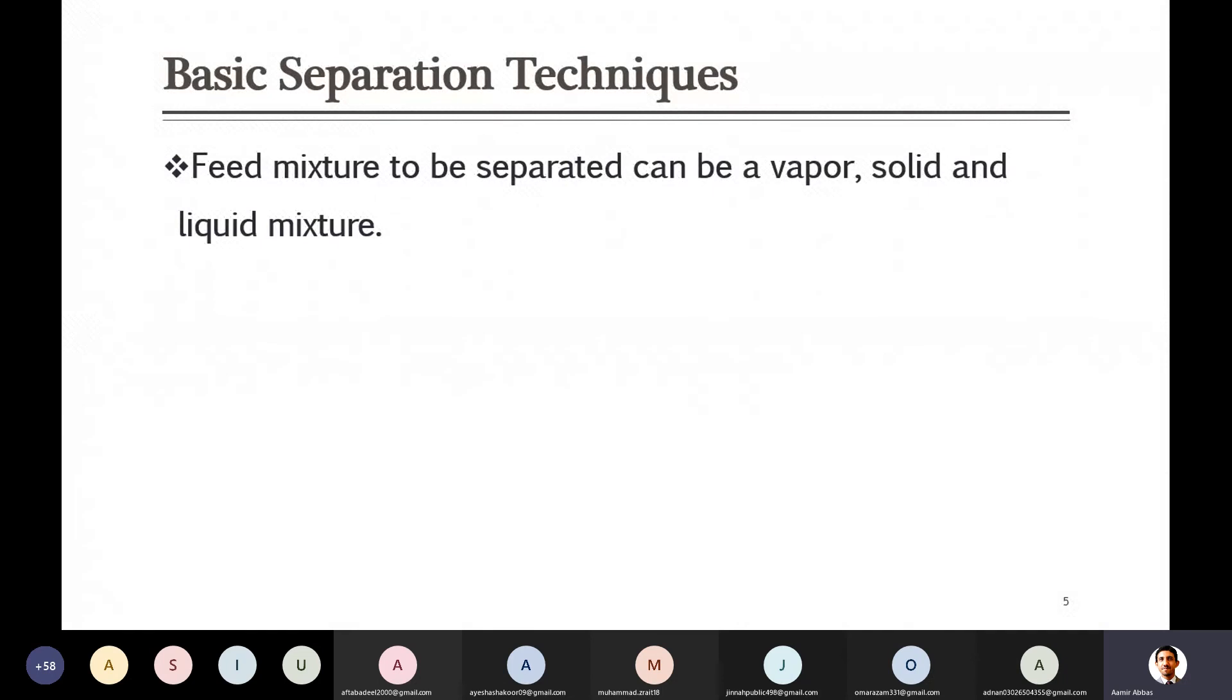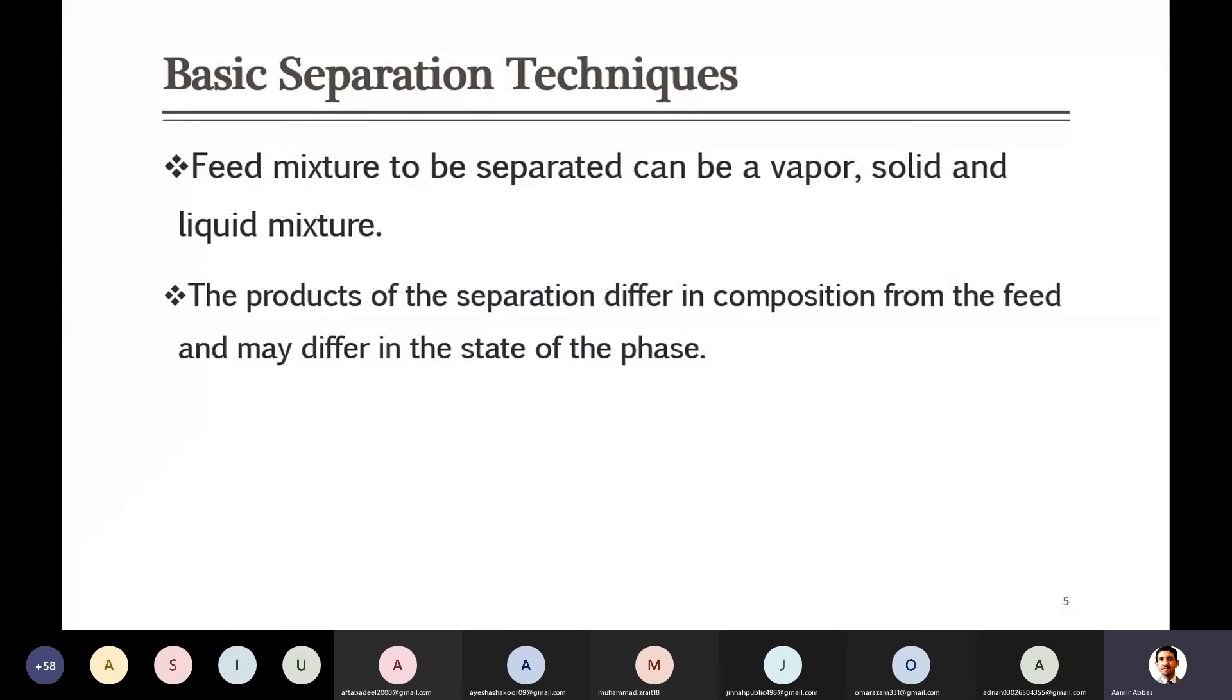Feed mixture to be separated usually comes in the form of either a gaseous mixture like in the form of vapor mixed with each other. For example, there is air - air it seems a single phase but that is a mixture of different gases. They can be separated into various constituents - for example you can get separated oxygen, nitrogen from the air, maybe argon from the air and so on. Similarly it can be a solid mixture or a liquid mixture and then that can get separated.